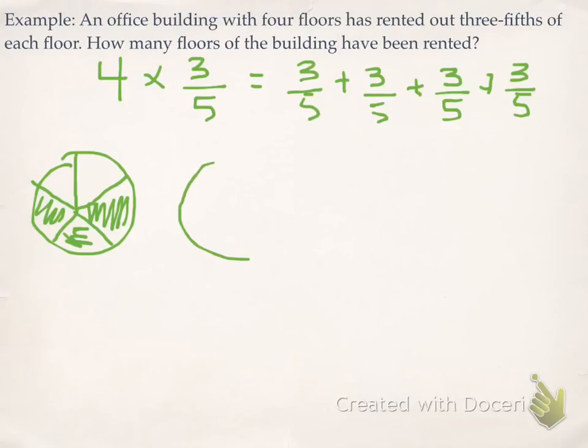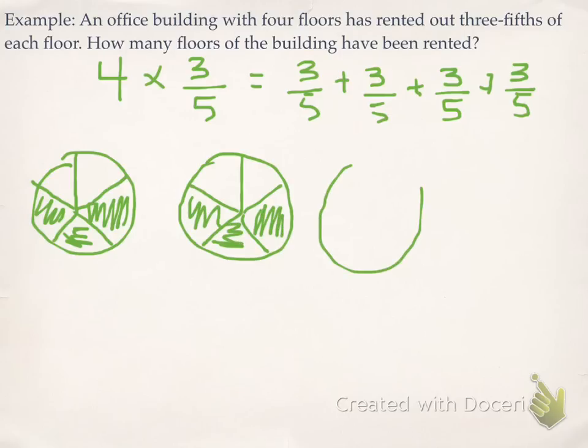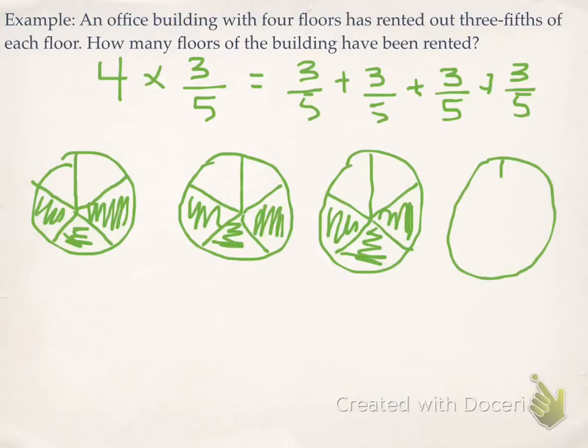I can draw a second fraction circle, and likewise, split it up into 5 groups, and then I'm going to shade 3 sections of it. The third one is going to be similar, 5 sections, I need 3 of them. And the fourth one, split into 5ths, and I need 3 of them. So I have 4 fraction circles here, and each one is represented by 3 fifths.